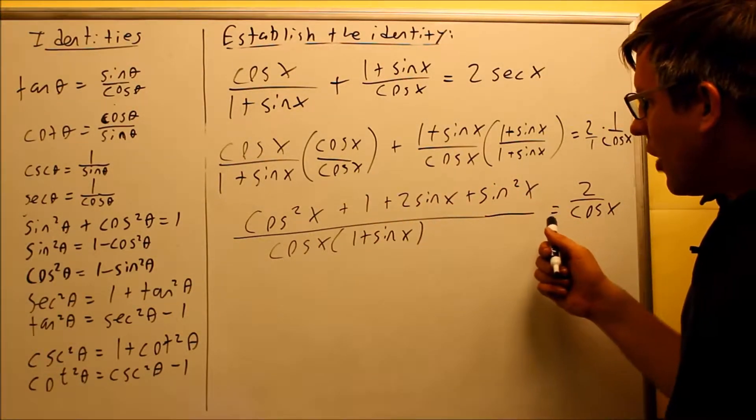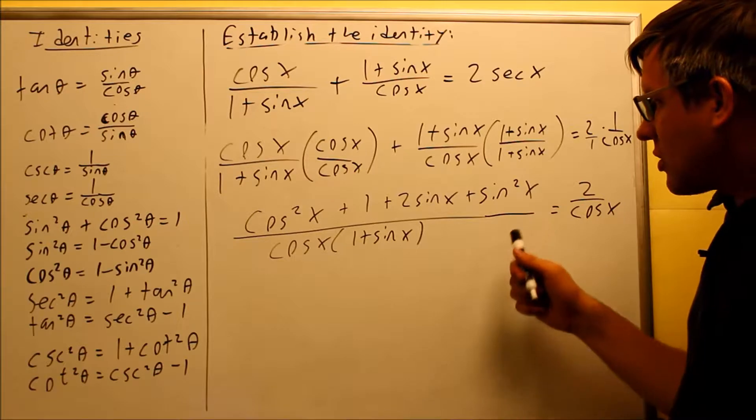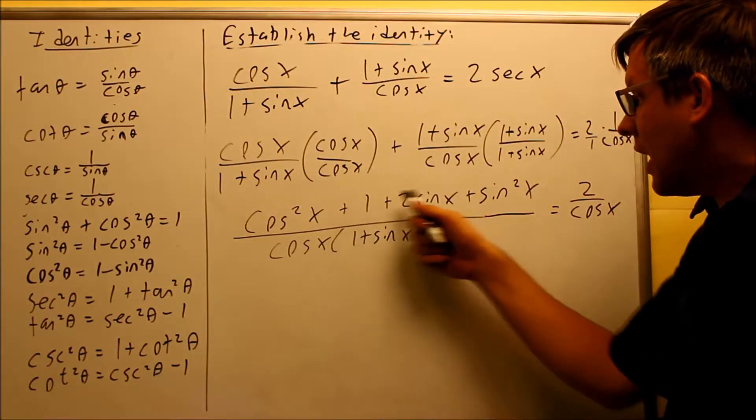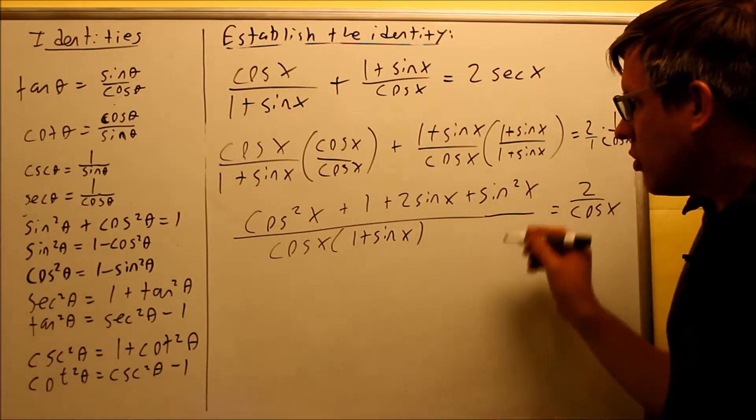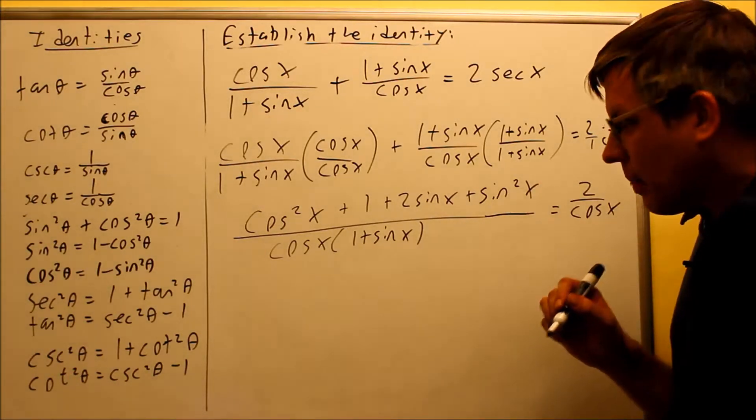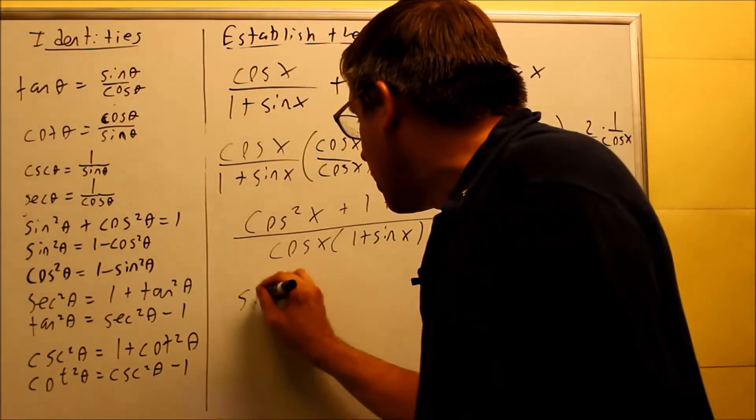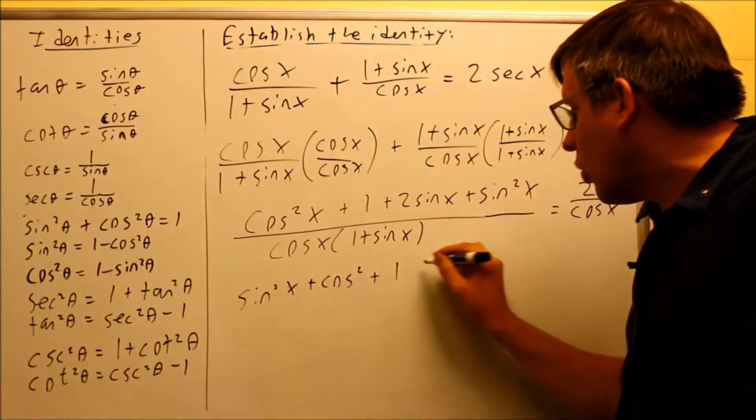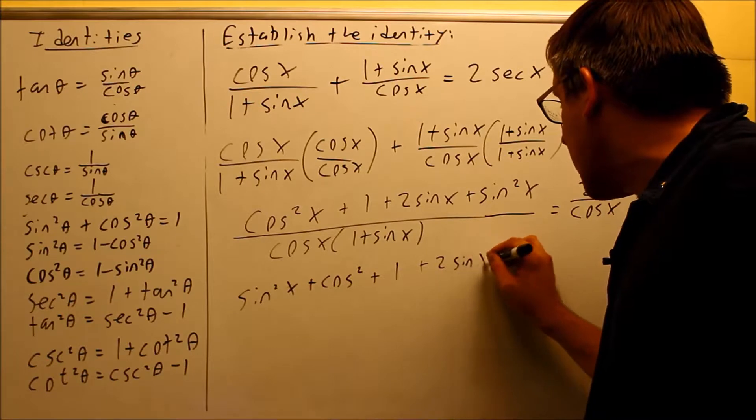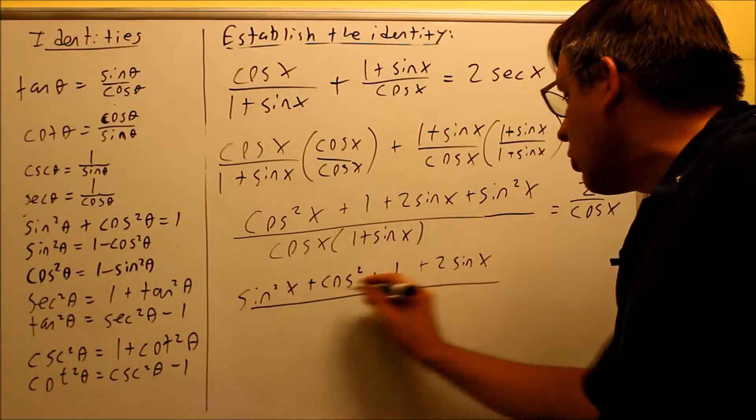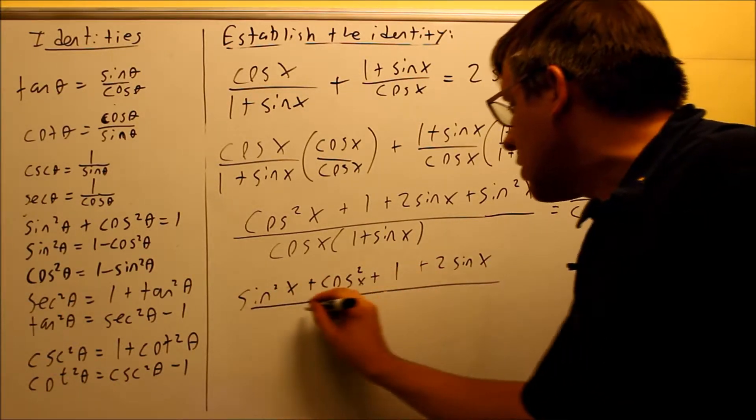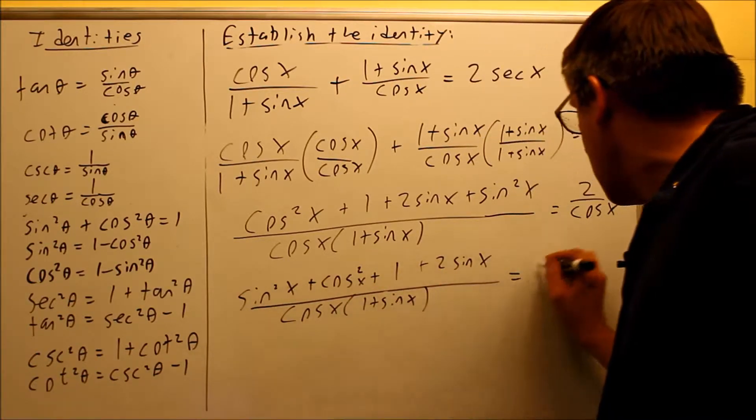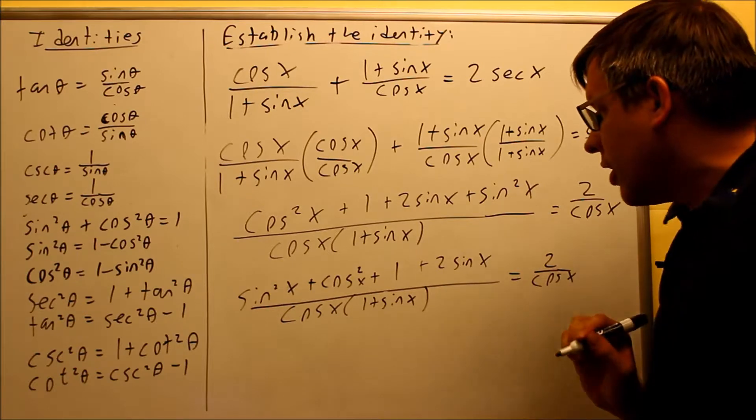What's next is I want to see if I can do any kind of simplifying or canceling. I can't cancel anything out just yet, because this is being multiplied and I have addition up here. So I'm going to do a little bit of rearranging and put the square terms together. I have the 1 and then I have the 1 plus 2 sine x. And I have cosine x, 1 plus sine x down here, and that's 2 over cosine x.